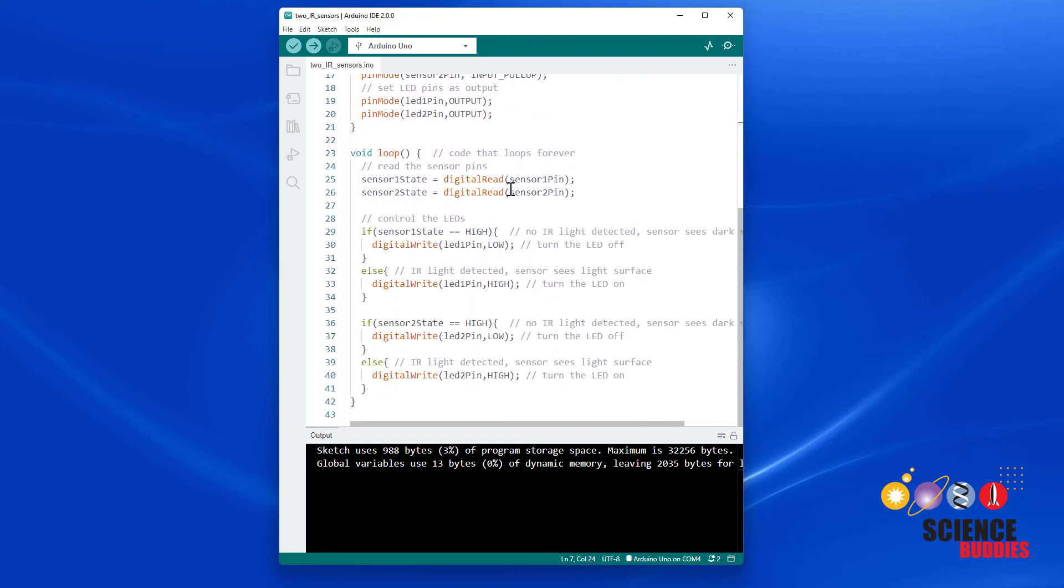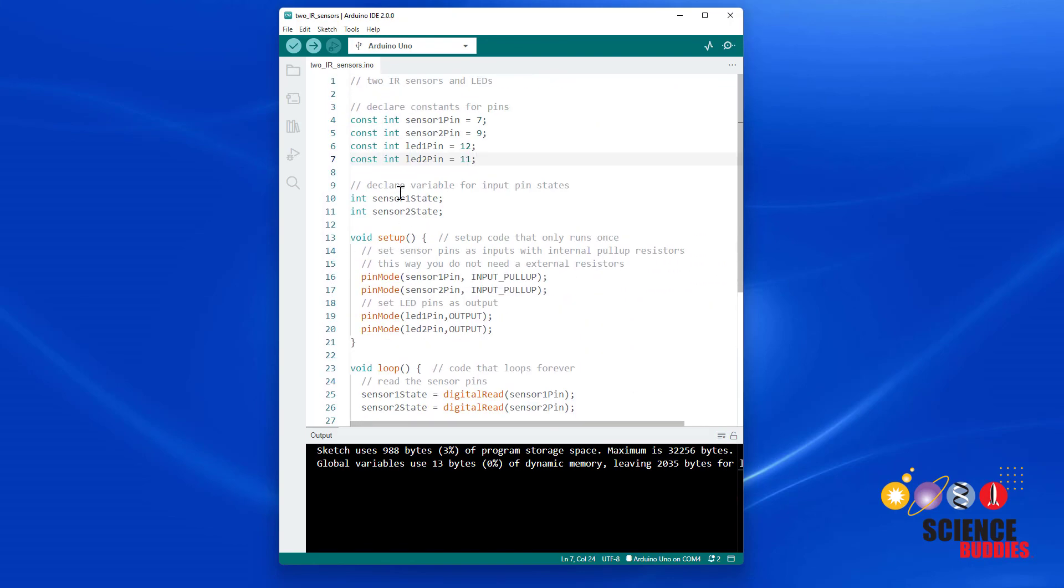And then you can do the same thing to extend this if you wanted to have a vehicle with three or four or even more of these sensors. Just keep track of your variable names and you can have as many of them as you want at least up to the limit of the number of available Arduino pins and the other stuff that you're connecting to your robot.